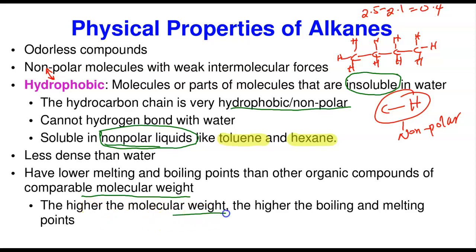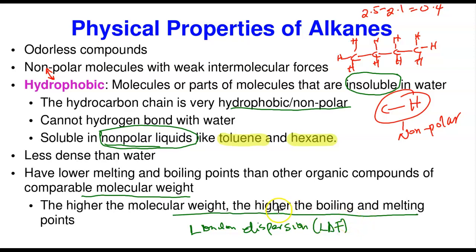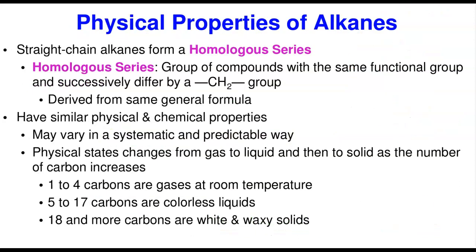The higher the molecular weight, remember, the higher the boiling and melting point — as the molecular weight increases, the boiling and melting point increase. This is because the only type of intermolecular force that exists here is the London dispersion force. London dispersion force is only affected by molecular weight, so if you increase the molecular weight, you also increase the London dispersion force, which increases the boiling and melting point.